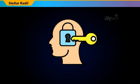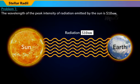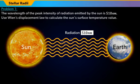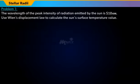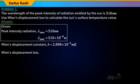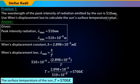Problem 1: The wavelength of the peak intensity of radiation emitted by the star is 510 nanometers. Use Wien's Displacement Law to calculate the value for the surface temperature of the star. Substituting the given values of lambda max into Wien's Displacement Law, lambda max = B/T, we get T = 2.898 × 10⁻³ / (510 × 10⁻⁹). By solving, the value of the surface temperature of the star is 5,700 Kelvin.